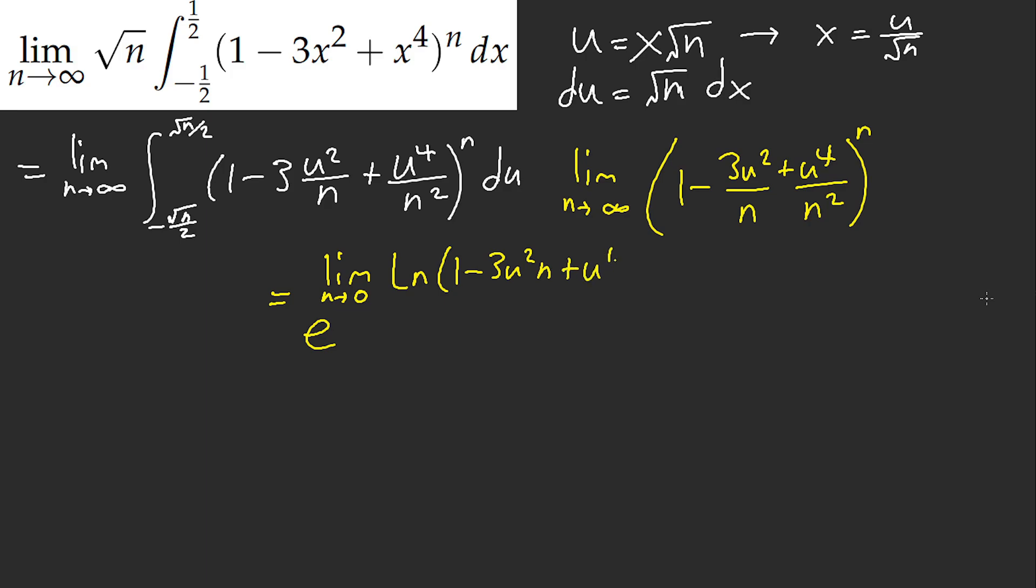n plus u4 n squared all over n. Now we can easily do L'Hopital's rule. Now this is just simply 1 minus 3u squared n plus u4 n squared, n plus u4 n minus 3u squared. If we plug in 0, we get minus 3u squared.